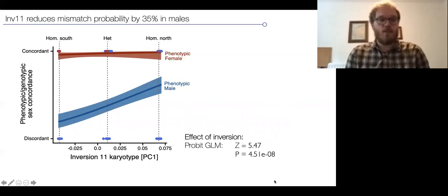We looked at the sex concordance between phenotypic and genetic sex. We scored this, and then looked how this changes with the increase of inversion frequency. Interestingly, what we see is that in females, there's not a strong effect of the inversion. But in males, we see that the lack of the inversion, which is here in the bottom left, they have a relatively high probability of mismatch between phenotypic and genetic sex, about 75%. But this decreases by 35% in males with the increasing inversion frequency. This inversion seems to somehow modulate the temperature sensitivity of sex determination.